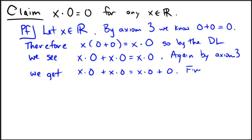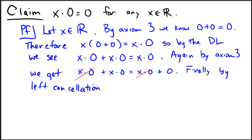Finally, one more step: by left cancellation, we cancel out x times 0 from both sides. Here we have on the left-hand side x times 0, and on the right-hand side just 0, which is exactly what we wanted to prove.